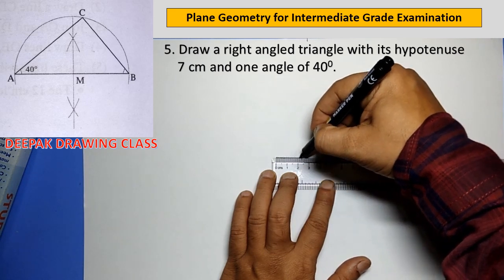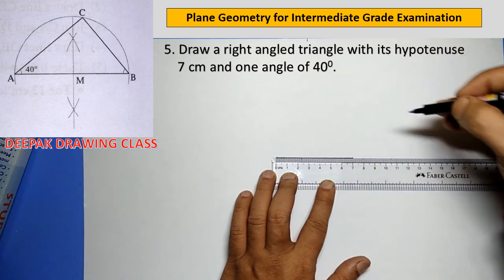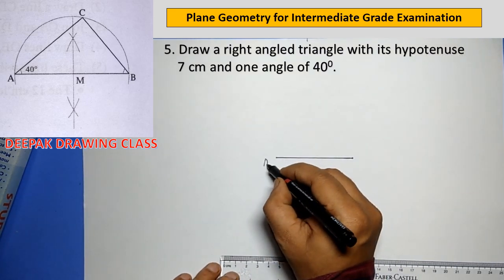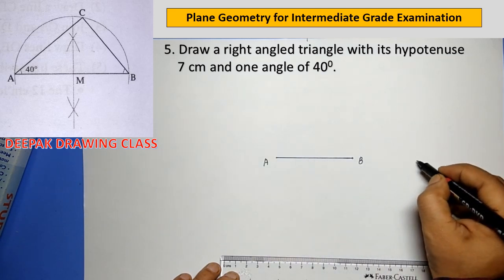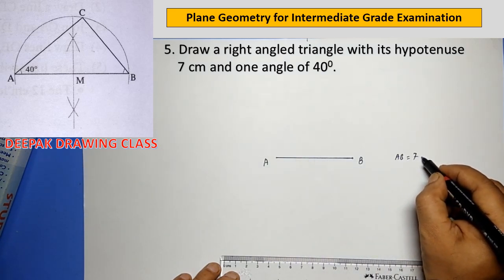Our fifth construction is how to construct a right-angled triangle, its hypotenuse and one acute angle being given.